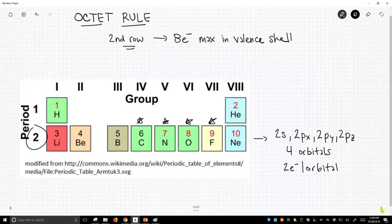Well, if we have four orbitals and two electrons per orbital, we are therefore going to have eight electrons as our maximum number. So eight electrons leads us to the octet rule.